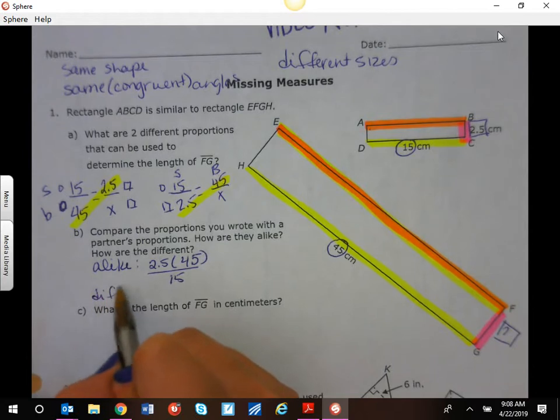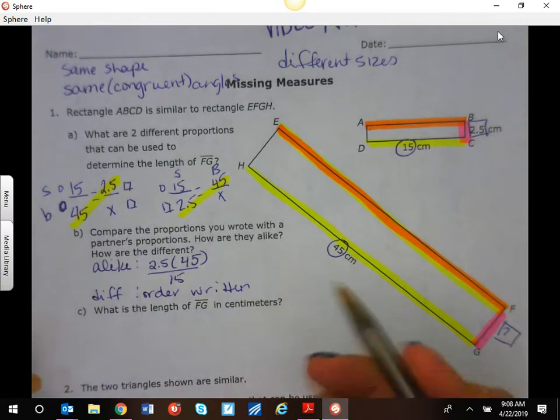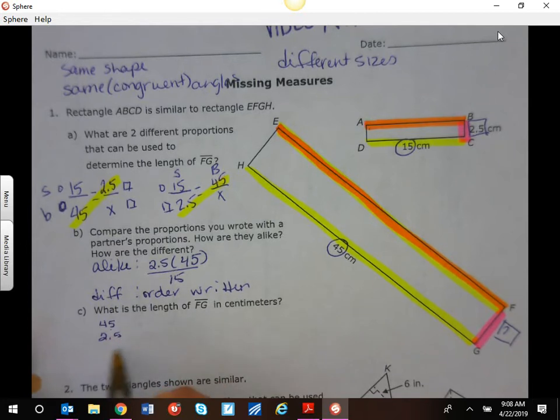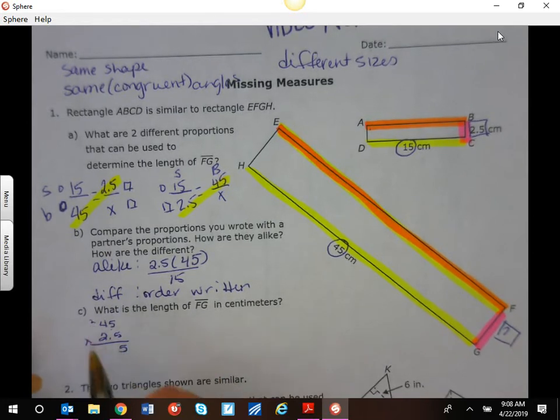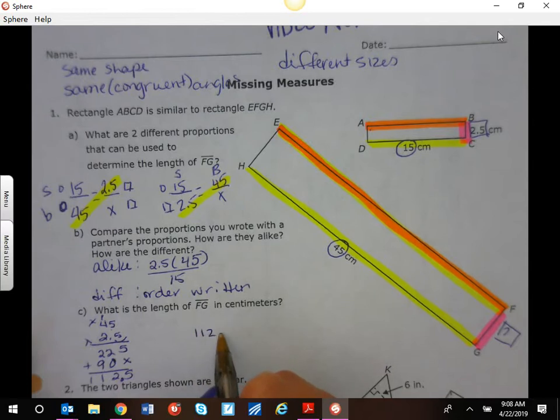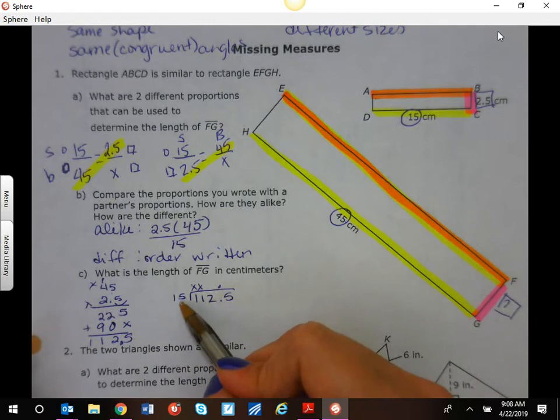So when you're going to solve it we're just going to do what we wrote here. We're going to say 45 times 2.5. 25 here is a 2, 22 placeholder 10 9 5 to 11. We had one number behind a decimal. So 112.5 divided by 15. Don't forget to bring up your decimal. 15 doesn't go into 1 or 11. 15 goes into 112. So 30, 60...